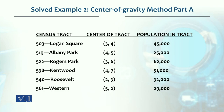These are the census tracts: Logan Square, Albany Park, Rogers Park, Kentwood, Roosevelt, and Western. These are the six census tracts.